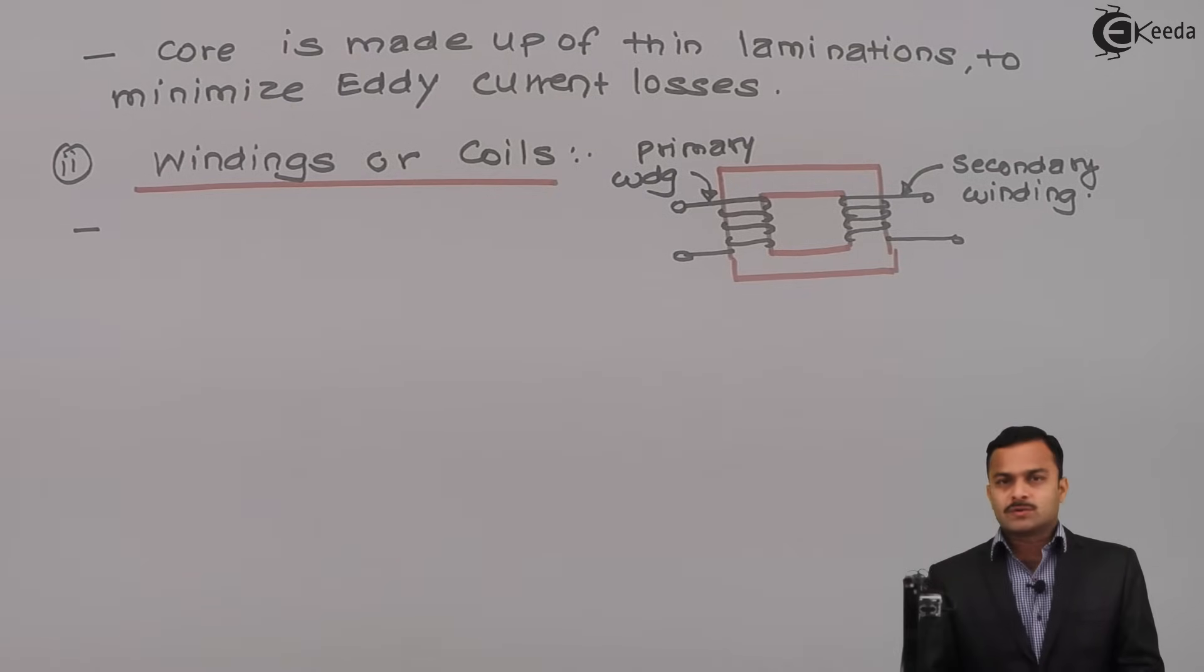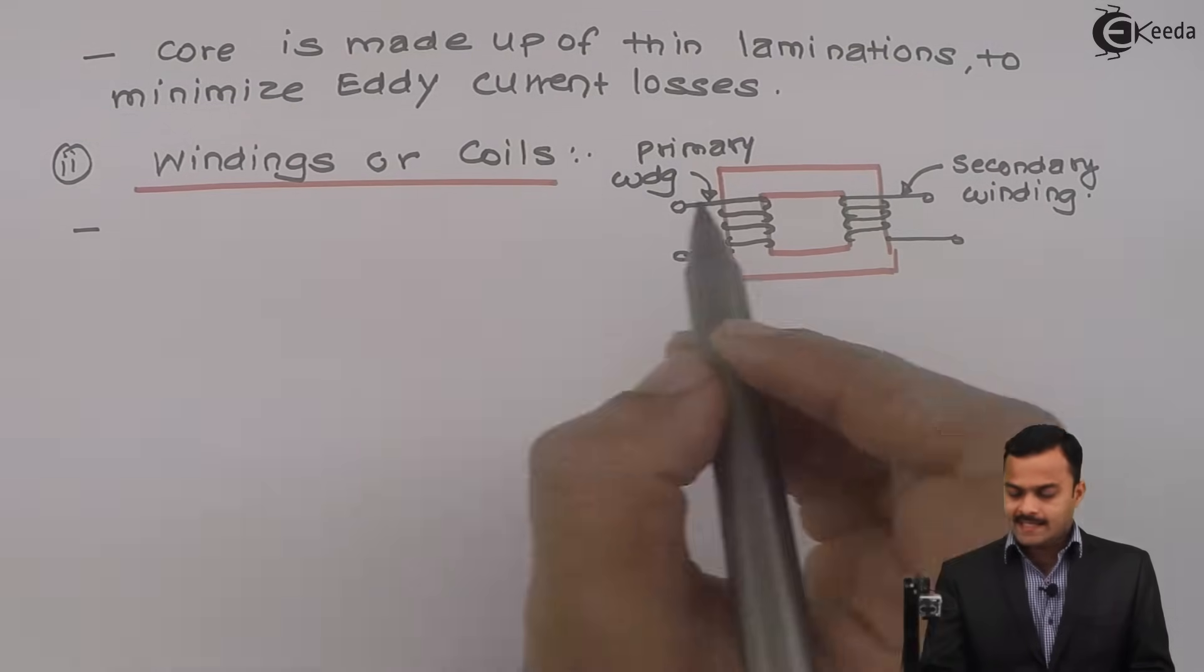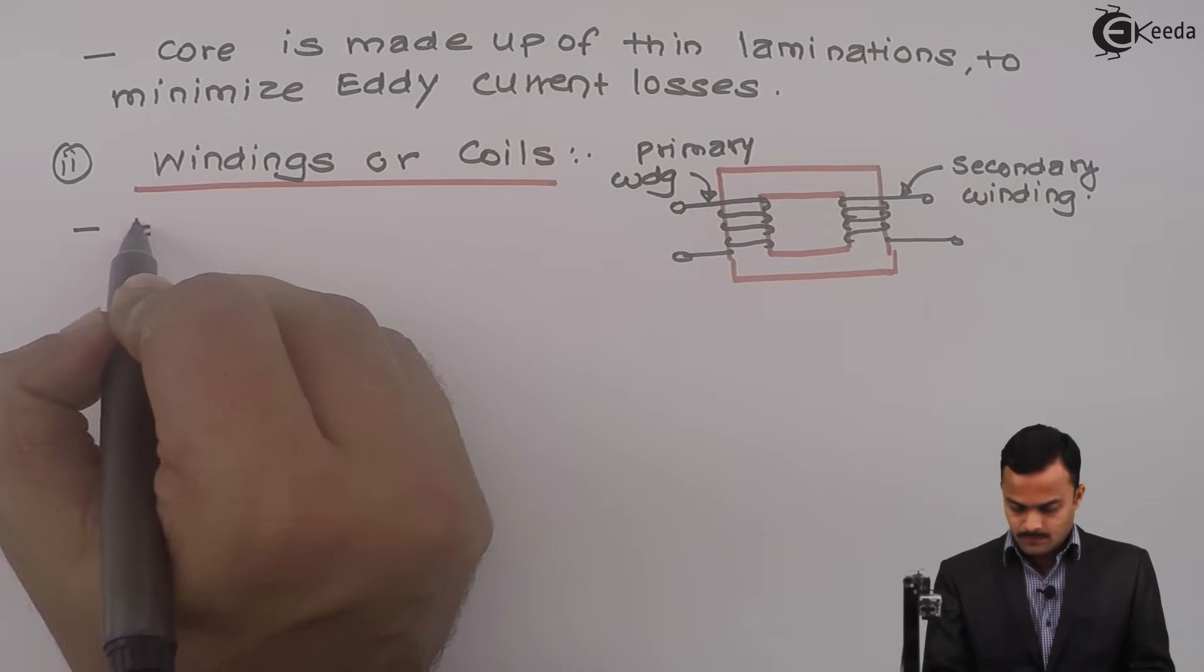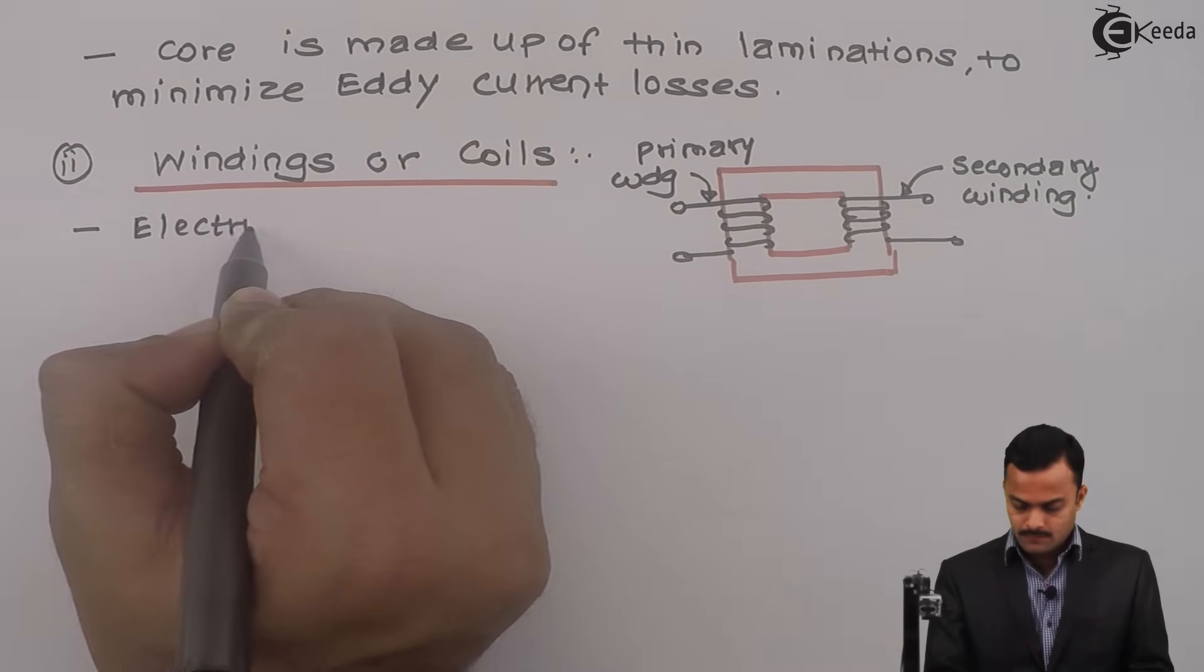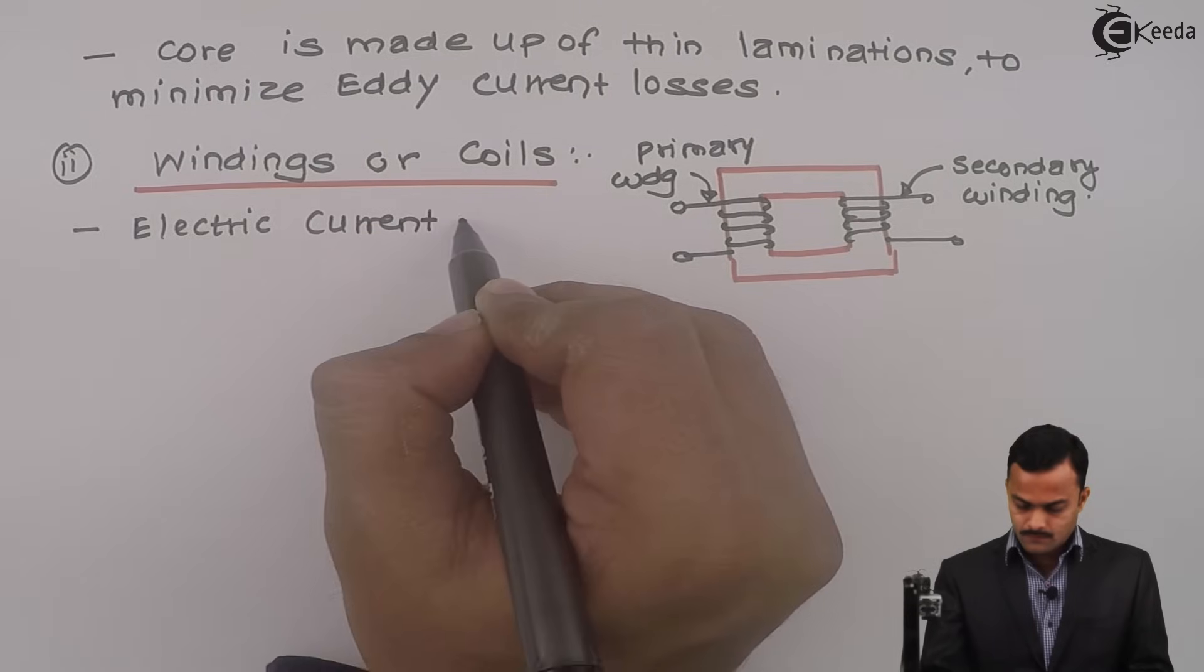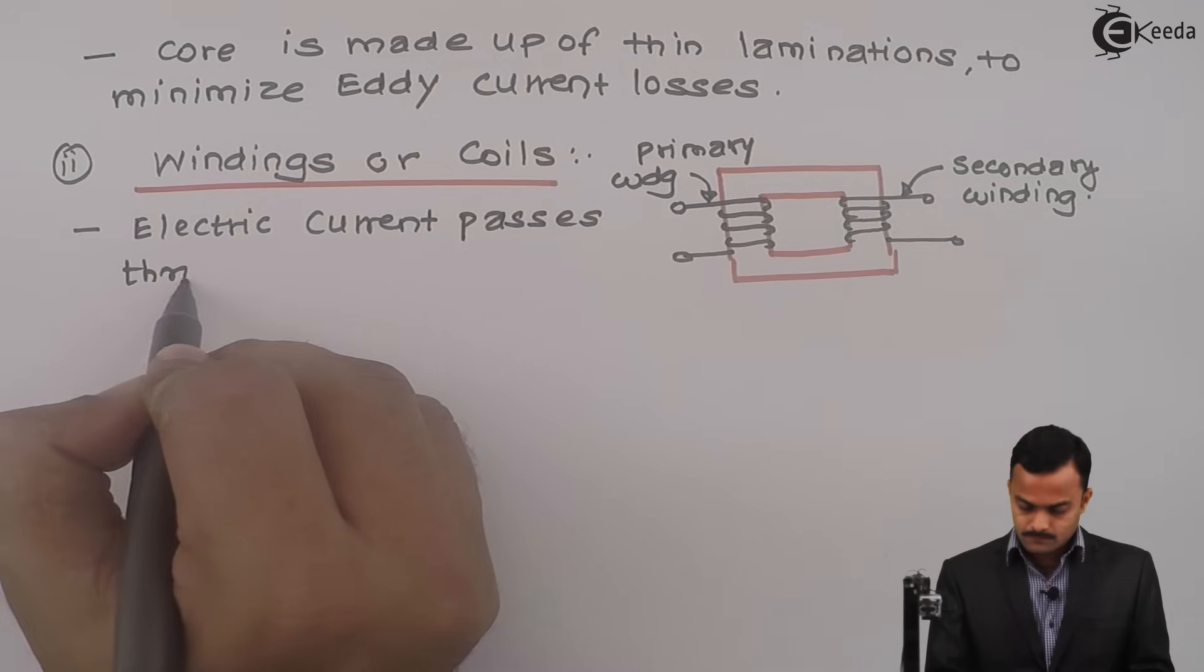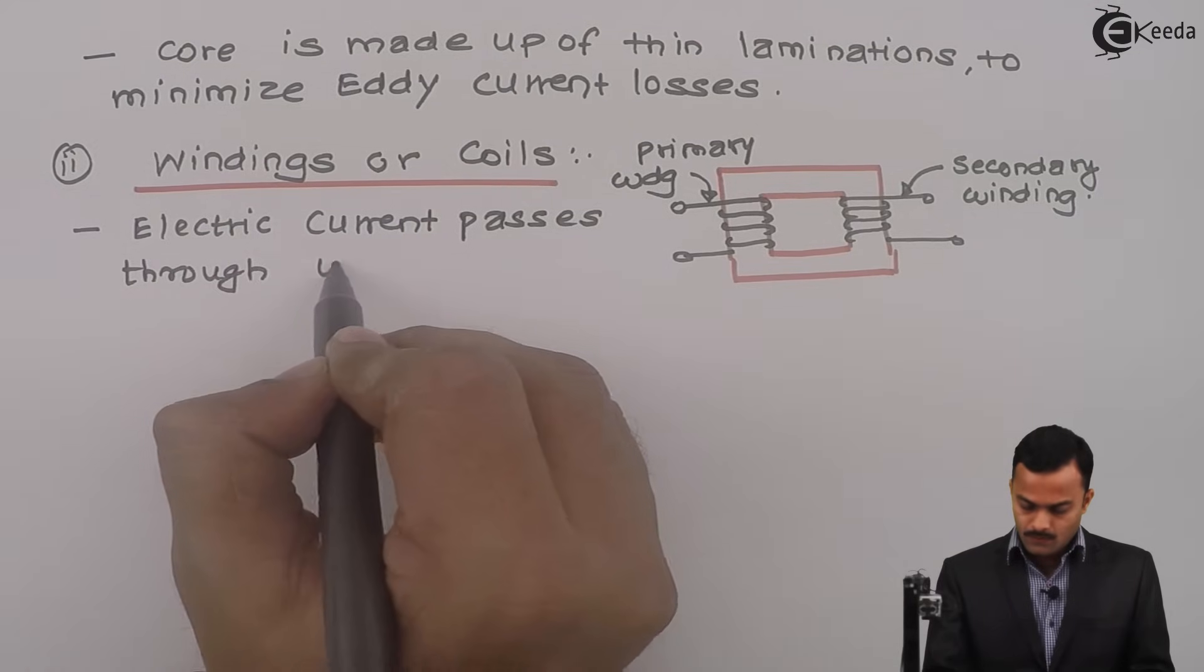And here since load will be connected we will call this as a secondary winding. So what is the job of this winding? Windings carry primary and secondary current. So electric current passes through windings.